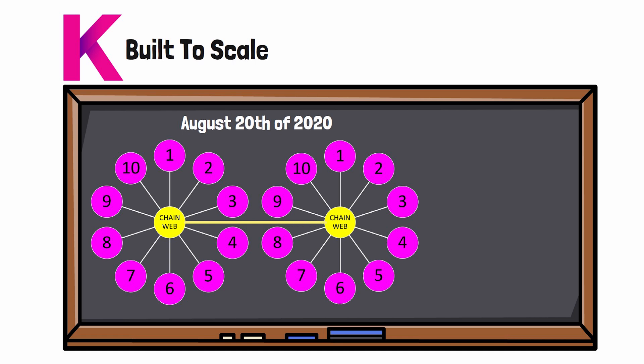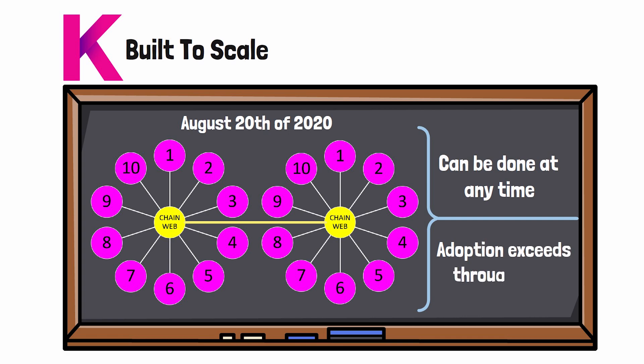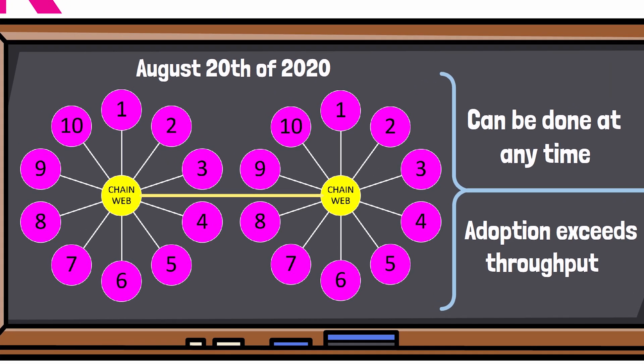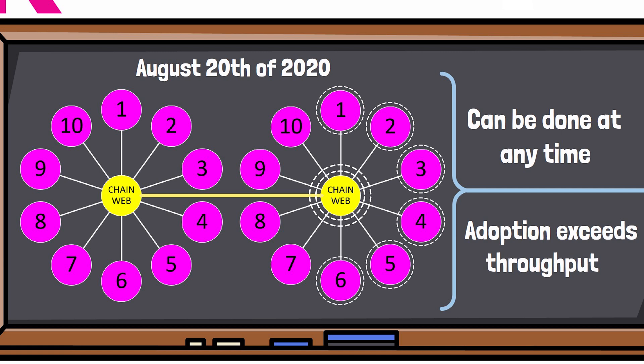This type of hard fork can be done at any time or whenever adoption overshadows the existing throughput. This means that when the Kadena network gets so busy that the current 20 blockchain architecture starts getting congested, the Kadena network is already pre-coded to hard fork.